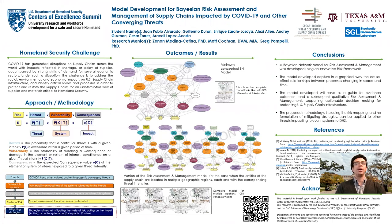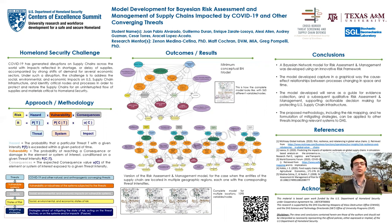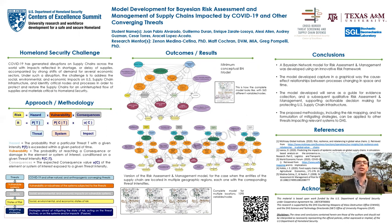In this project, a Bayesian network model for risk assessment and management was developed using an innovative risk framework. This model captures, in a graphical way, the cause-effect relationships between complex processes that can change both in space and time, and that are needed for the assessment of the states of risk posed by COVID-19 and other converging threats. Additionally, the model developed will serve as a guide for evidence collection and a subsequent qualitative risk assessment and management that supports actionable decision-making for protecting US supply chain infrastructure. Also, very importantly going forward, the proposed methodology, including the risk mapping and mitigating strategies, can be applied to other threats and other systems of relevance for the Department of Homeland Security.